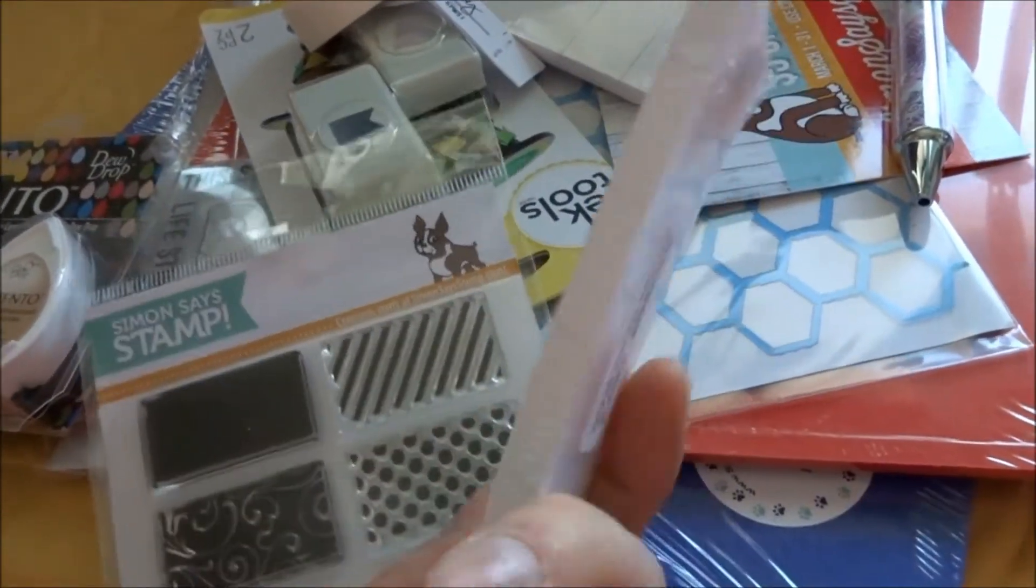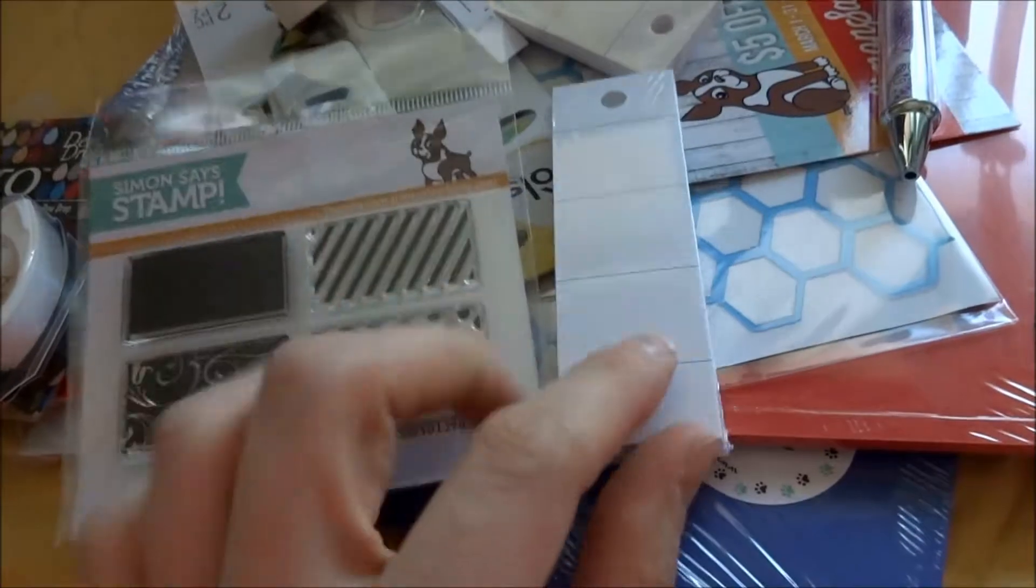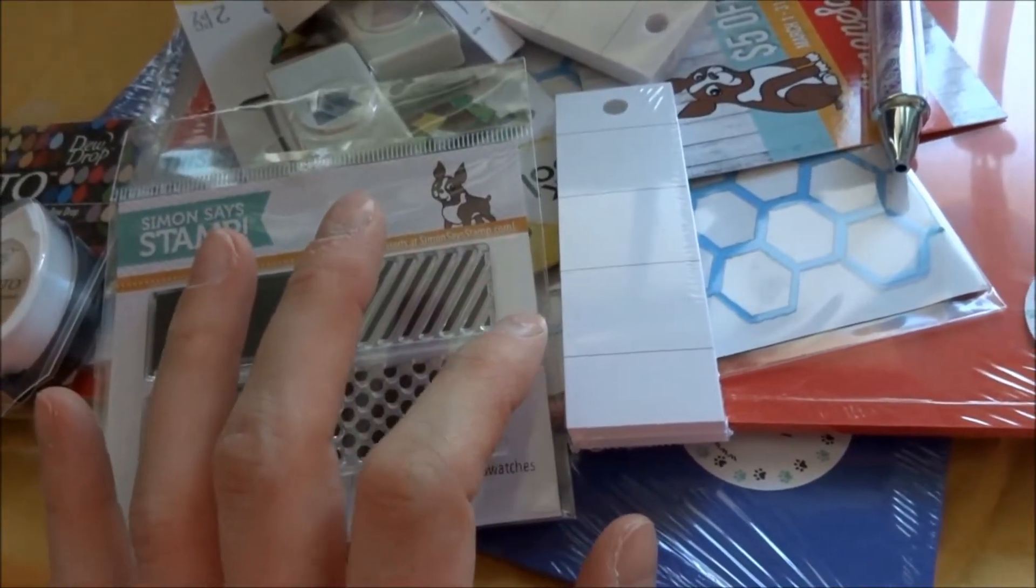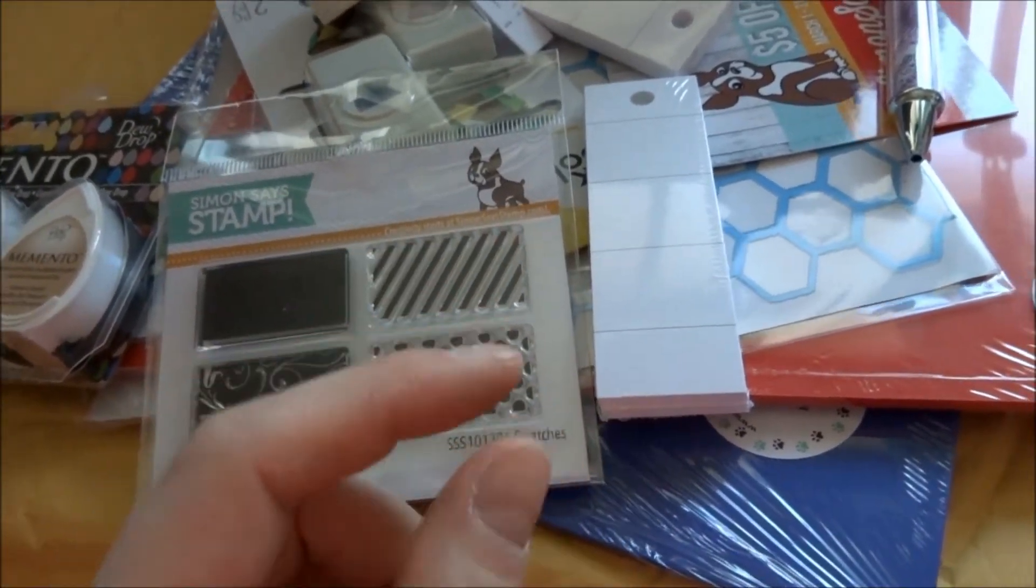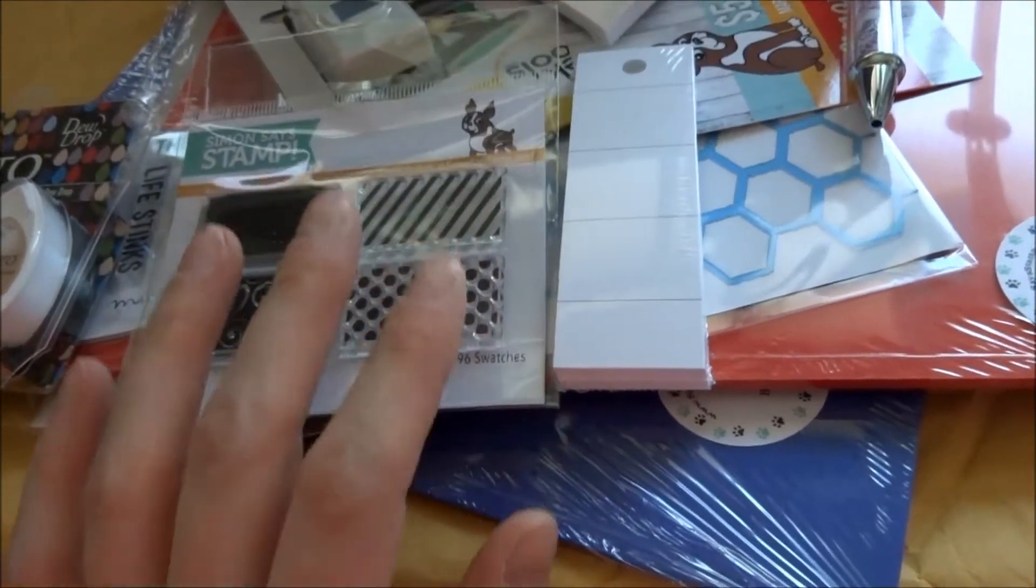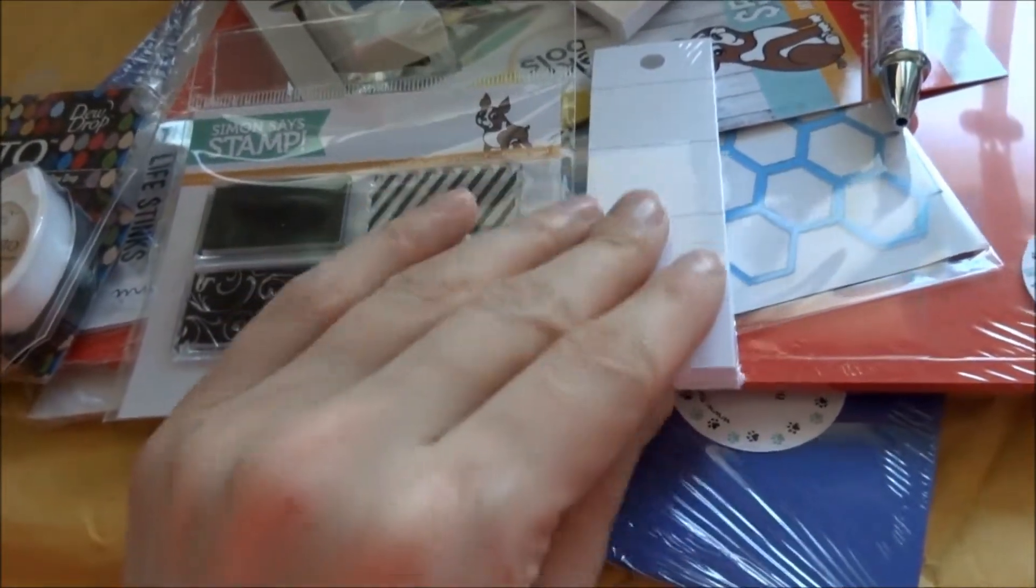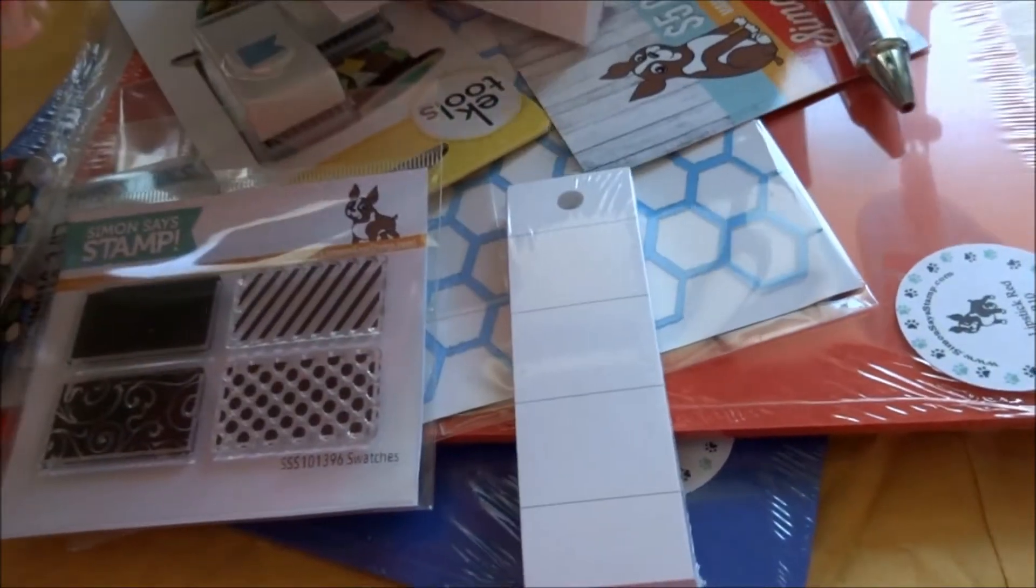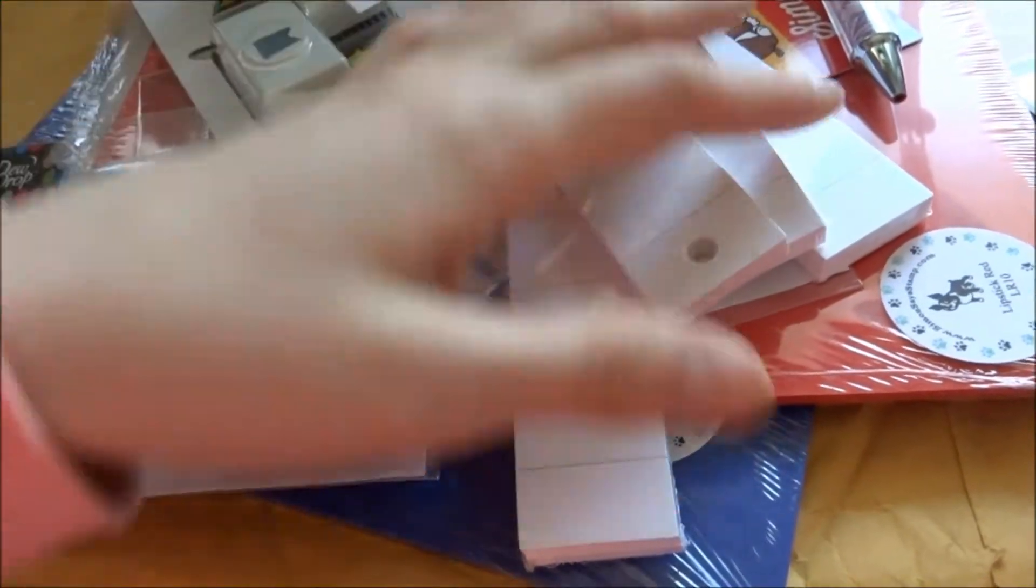...ink swatches. You can buy them in just the pad, you can actually get a set, but it comes with each of the papers for Simon Says. I didn't want to get all the paper from them, so I just got the plain ones.